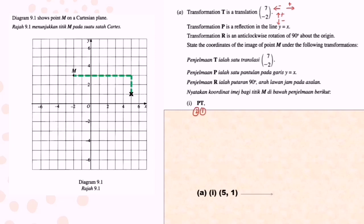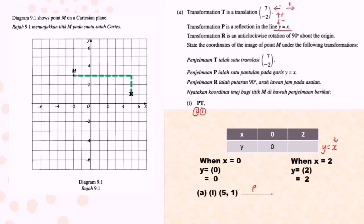Now try to do the reflection in the line Y equals X. First you must know how to draw the line Y equals X. So when X equals 0, Y also equals 0. When X equals 2, Y also equals 2, because you substitute it into Y equals X. So after you have two coordinates 0, 0 and 2, 2, you plot it into the Cartesian plane. 0, 0 and 2, 2 and you draw a straight line pass through these two plotted points. This is the line Y equals X.